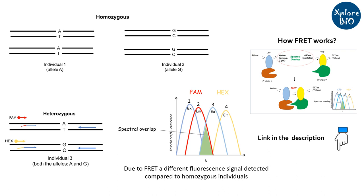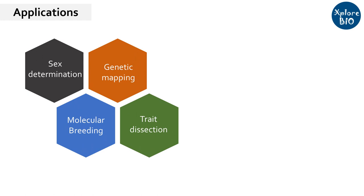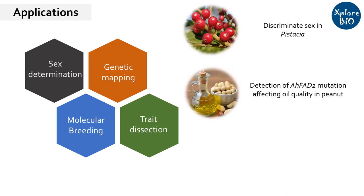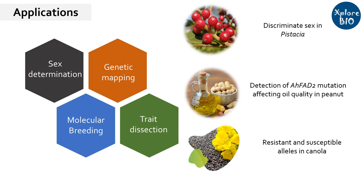Using CASP marker, you can genotype a large number of individuals for studies like sex determination, genetic mapping, molecular breeding, and trait dissection. CASP marker has been successfully utilized to discriminate between male and female Pistacia species. Using CASP marker, mutation in the FAD2 gene affecting the fatty acid composition — and hence its quality, flavor, and shelf life — can be easily detected. The technique is also used to discriminate resistant and susceptible individuals of canola.